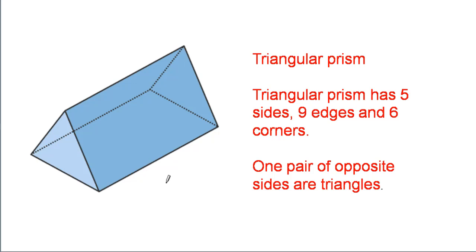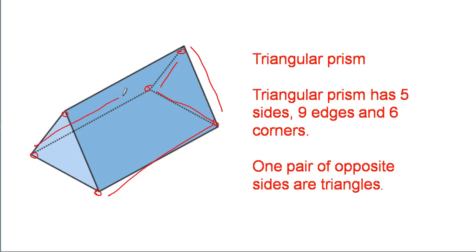This shape has five sides, nine edges and six corners. One, two, three, four, five, six corners. One, two, three, four, five, six, seven, eight, nine edges. One pair of opposite sides are triangles.